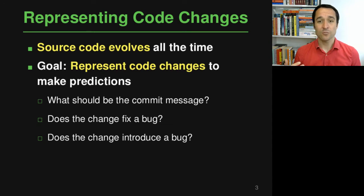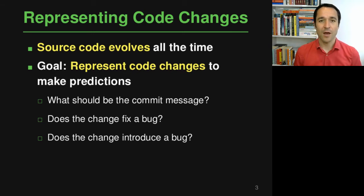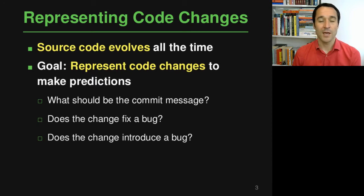Specifically, for example, you can try to predict what the commit message for a code change should be, so that a developer doesn't have to type the commit message each time but it's predicted automatically by a model. Or you can predict whether a code change is actually fixing a bug, which may be interesting to identify specific code changes that you want to apply somewhere else. Or you may want to predict whether a code change is actually introducing a bug. If you have a way to predict that, you can allocate more testing or quality assurance resources to that specific code change. All of this relies on some way to reason about code changes using a hierarchical neural network.